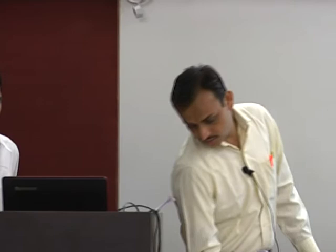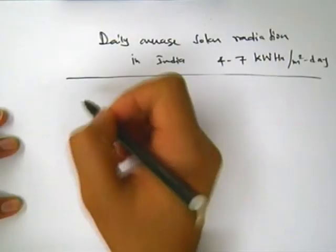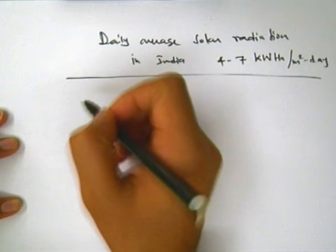To help with this tutorial, my student Sastri will help you out. Before we start, I want to tell you one thing: the average daily solar radiation in India varies — that is one number everybody must be aware of — from 4 to 7 kilowatt hour per meter square per day.